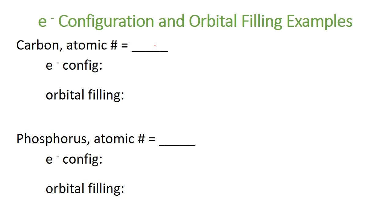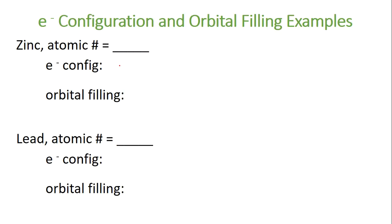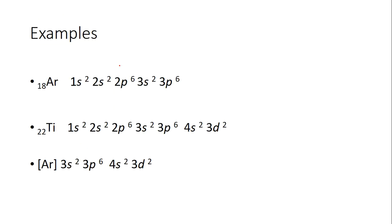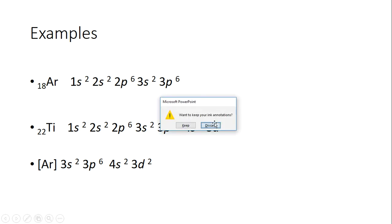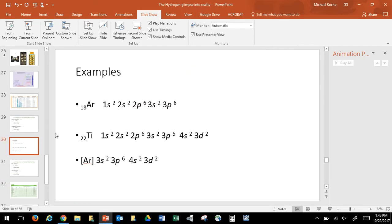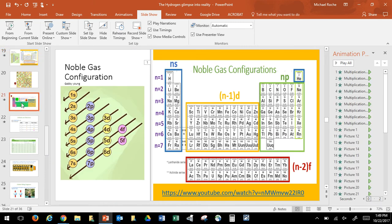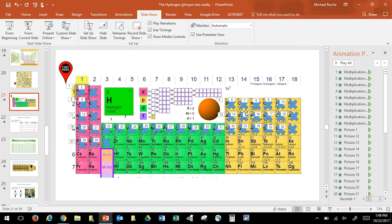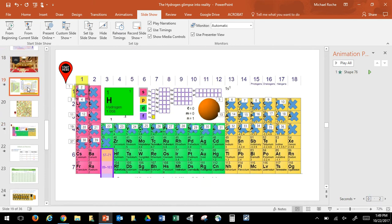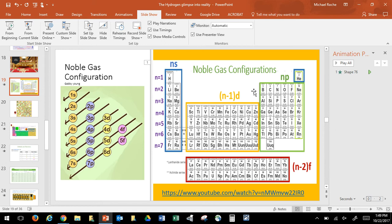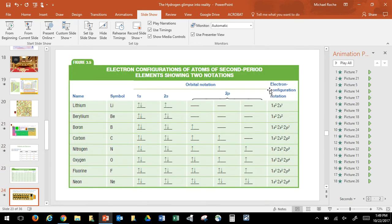So let's do one. Carbon has atomic number 6 — there are six electrons. Looking at the periodic table, the electron configuration is 1S2, 2S2, and 2P2.